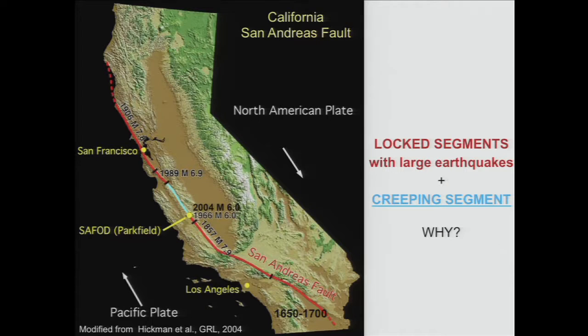The obvious and interesting question to ask is: why do we have this creeping segment? And also, on the locked segments, when they start moving, why are they moving fast? Why can't they simply catch up slowly — maybe faster than the plate motion, but still slowly? Why do they accelerate? To answer these questions, we have to take a look at the details of what happens under the hood of this machine that creates earthquakes.